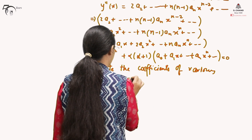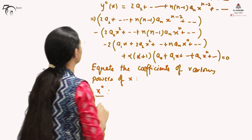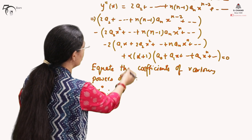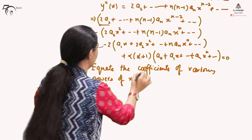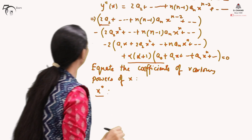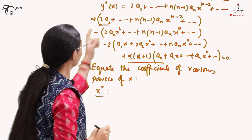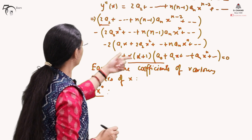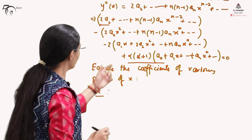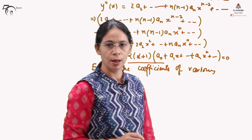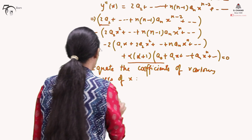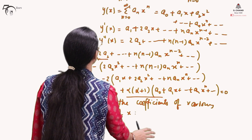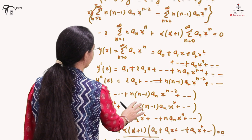We need to equate the coefficients of various powers of x. Let us start by equating the coefficient of x raised to the power 0, that is the constant term. In this expression the constant terms are 2a_2 and the alpha(alpha+1)a_0 term; the rest do not contain any constant. If we go for x raised to the power n, we need to equate the coefficient in the compacted form.